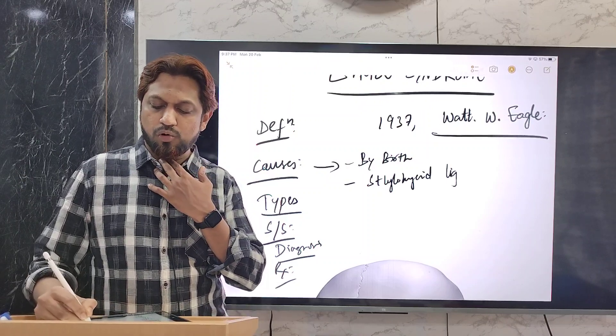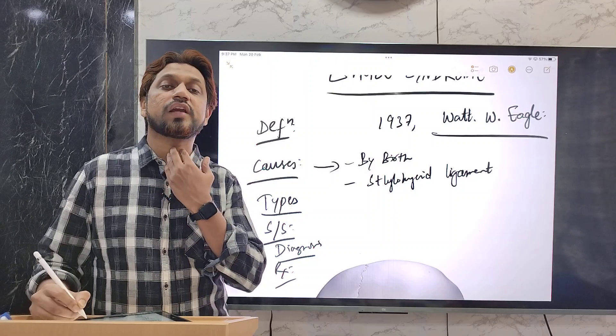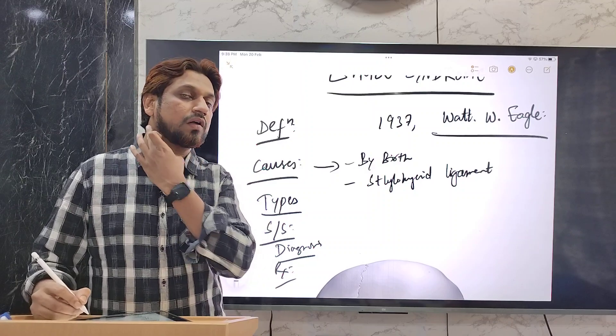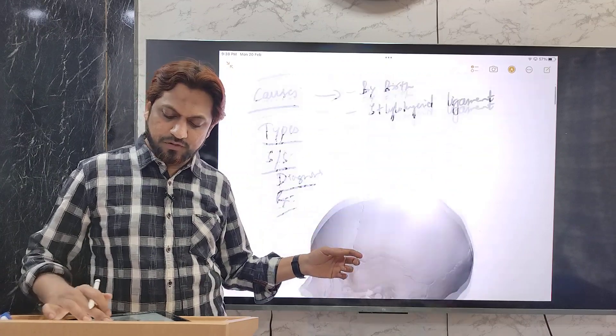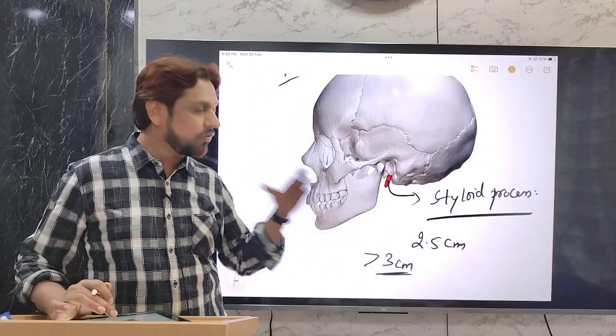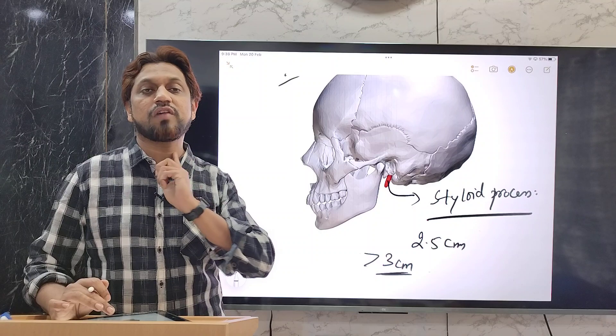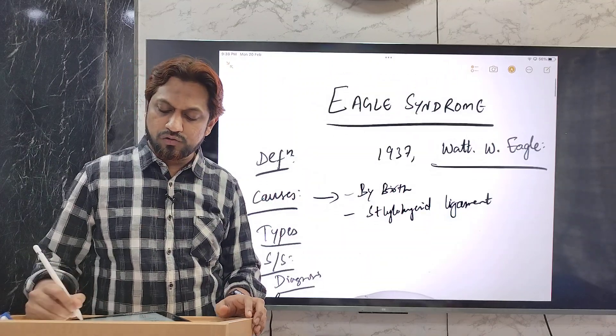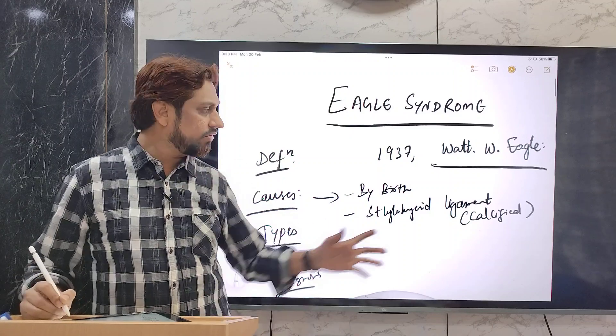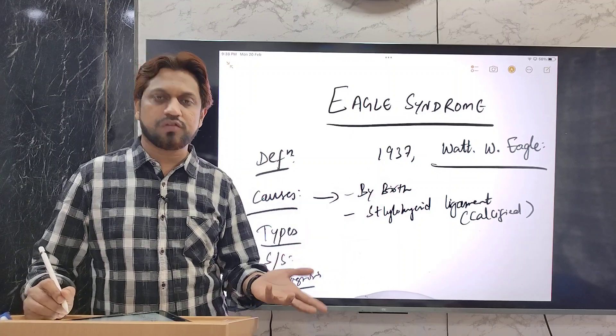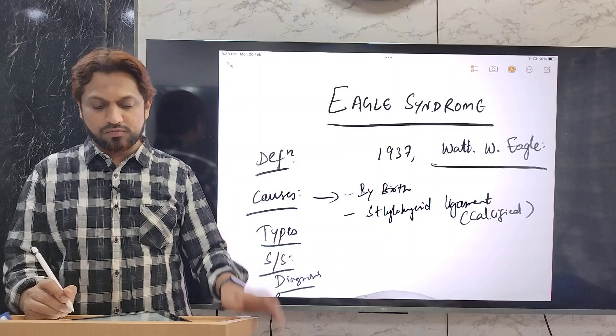One more thing is stylohyoid ligament. You know, there is a bone, hyoid bone here in the neck. There is one ligament. Ligament means a structure which will connect between the two bones. From this styloid process up to the hyoid bone, one ligament will connect. When this ligament is calcified due to the calcification of this stylohyoid ligament, it will act as an elongated styloid process which will cause the signs and symptoms.